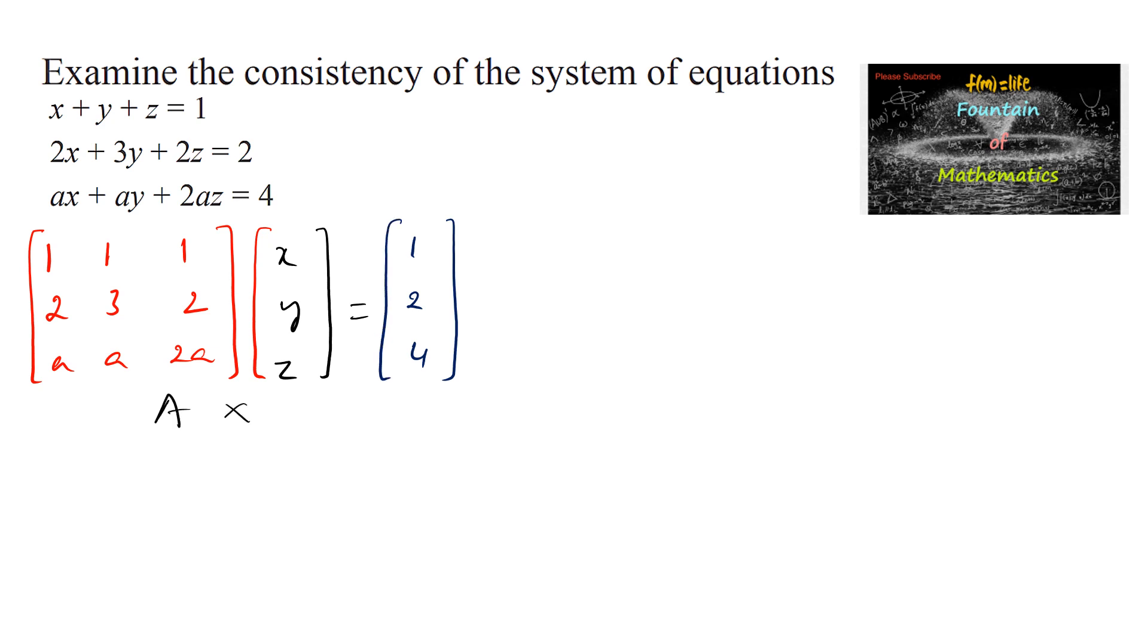This is in the form Ax = b, where A is the coefficient matrix, x is the variable matrix, and b is the constant matrix.